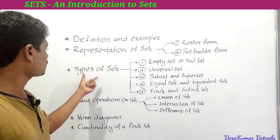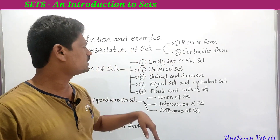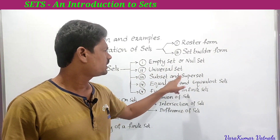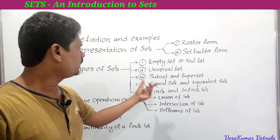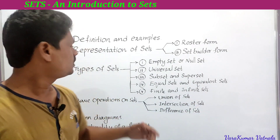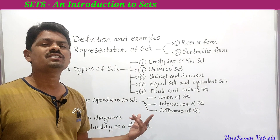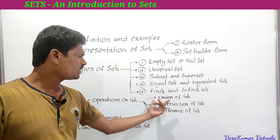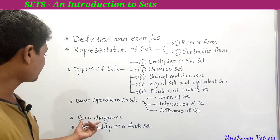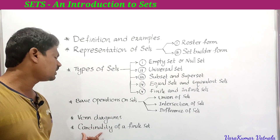Next is types of sets: empty set, null set, also known as void set, universal set, subset and superset, equal sets and equivalent sets, and finite and infinite sets. After that, we have basic operations on sets: union of sets, intersection of sets, and difference of sets. We also learn about Venn diagrams and cardinality of a finite set.